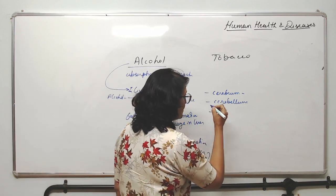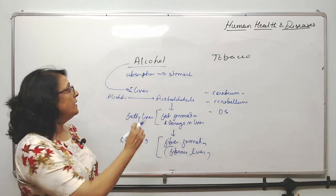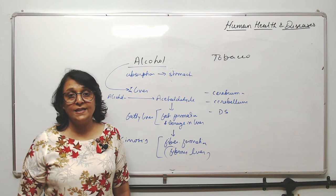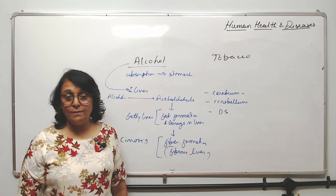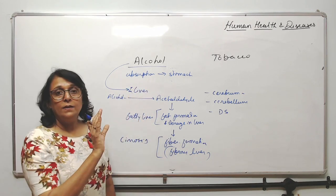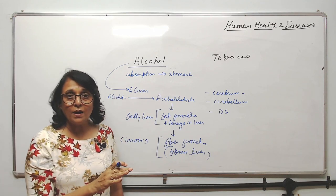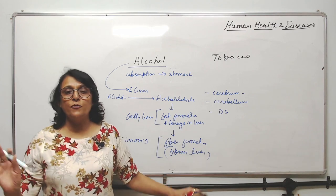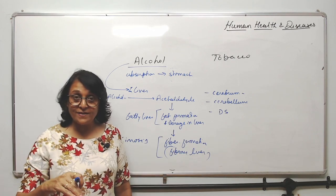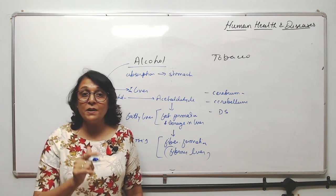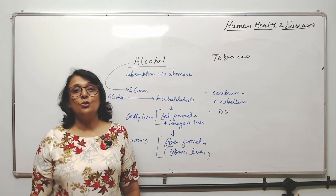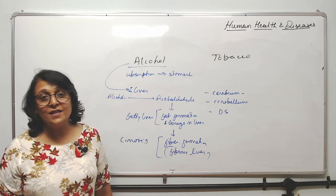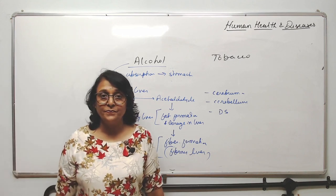Alcohol also affects our digestive system. When alcohol reaches the stomach, the stomach starts producing acid and enzymes, thinking something needs to be digested. But the alcohol gets absorbed from there, so the acid and enzymes remain in the stomach with no food. These then start attacking the wall of the stomach, resulting in peptic ulcers.